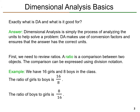Here's an example. Let's say that we have 16 girls and 8 boys in a classroom. The ratio of girls to boys is 16 to 8, or 16 divided by 8. The ratio of boys to girls is 8 to 16, or 8 boys for every 16 girls. Now, these ratios are equivalent. Here we have the number of girls in the numerator, and down here we have the number of boys in the numerator.